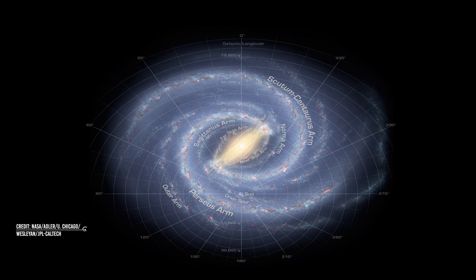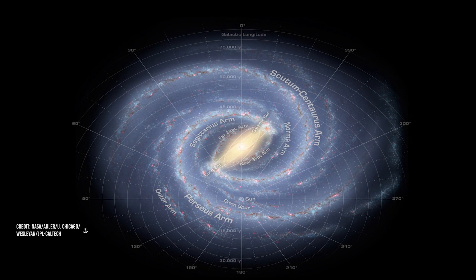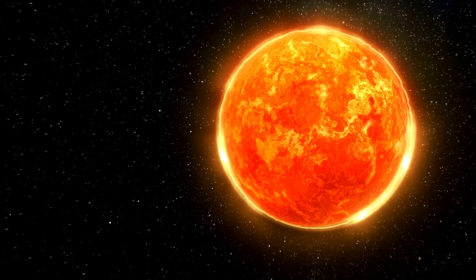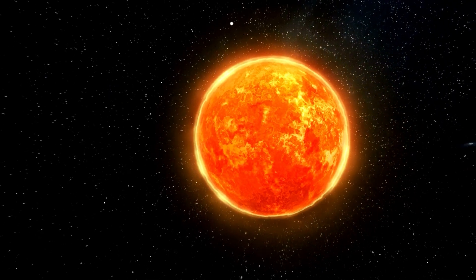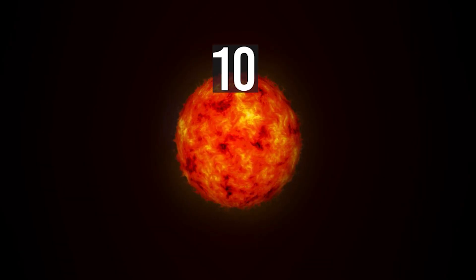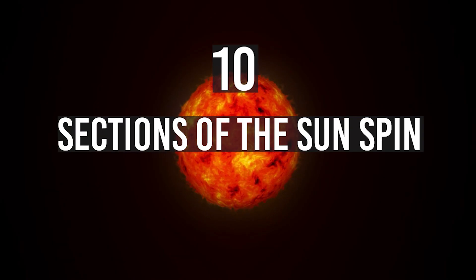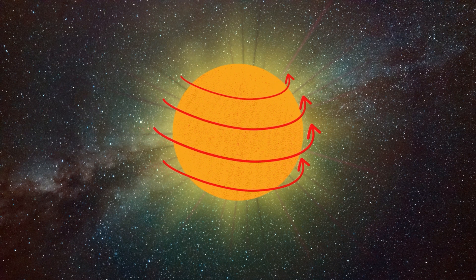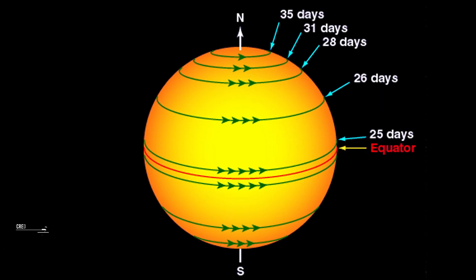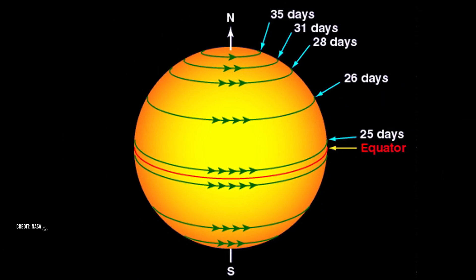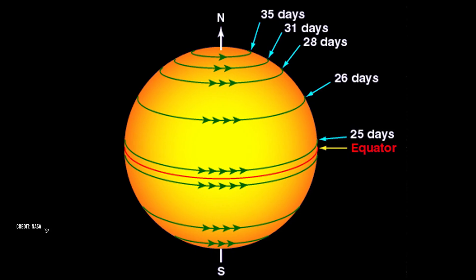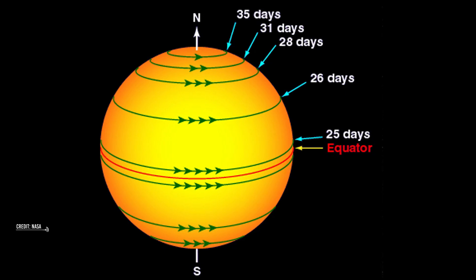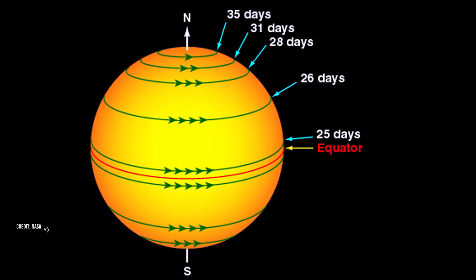However, not only does the Sun orbit the Milky Way center, it also rotates around its axis in the same direction as Earth does, counterclockwise, when looking down from the North Pole. But, number 10, sections of the Sun spin at different speeds. Because the Sun is gaseous, different sections rotate at different speeds. At the surface, the area around the equator rotates once about every 25 days. The Sun's North and South poles rotate more slowly. It can take those areas more than one month to complete one rotation.